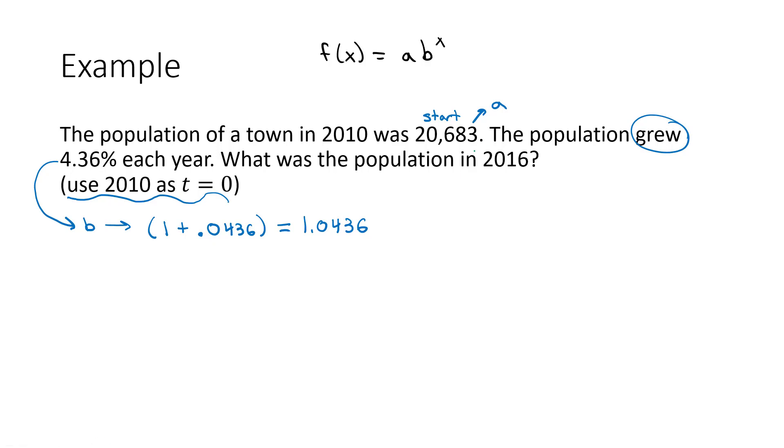So we have our starting point. We have our b, which we got from the percentage, always 1 plus the growth. So our function, f of t, we'll say t because it's time passing, is the starting point 20,683 times b, which is 1.0436 raised to the t power, however much time goes by.